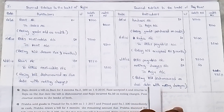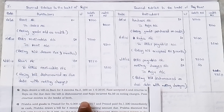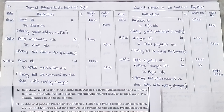This is the problem when a bill is retained with the drawer and dishonored with noting charges. Let us see some more problems in the next class. Thank you very much.